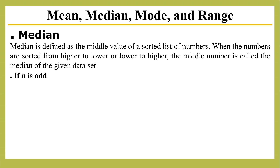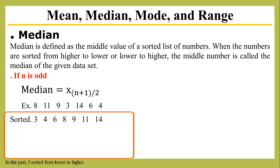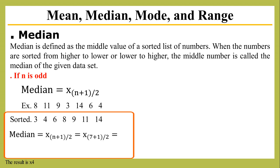This is the formula if n is odd. This is an example with n equals 7. I sort from lower to higher and apply the formula. The result is h4. Therefore, the median equals 8.